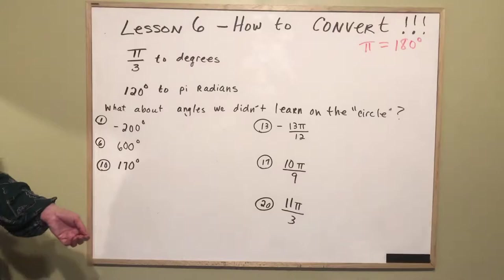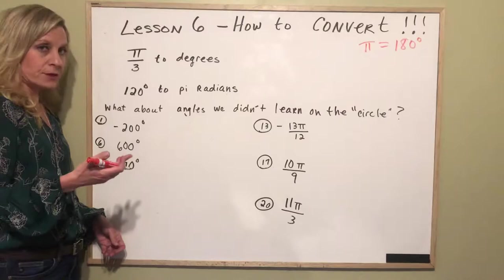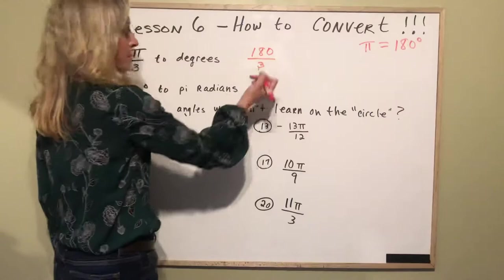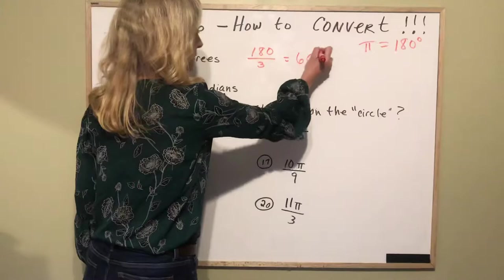But what I didn't spend a whole lot of time on was the actual conversion. So let's do that here. So pi is 180, all you need to do is put in 180 for pi, divide that by 3. 3 sixes are 18 so that goes in 6 with a 0 and you get 60 degrees.